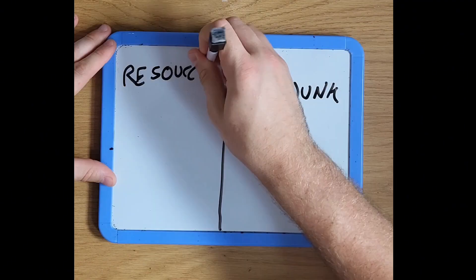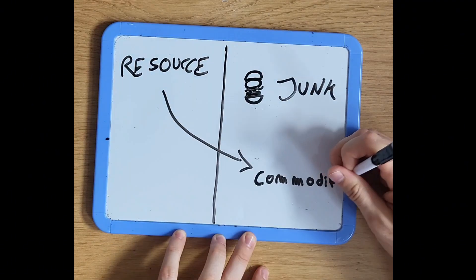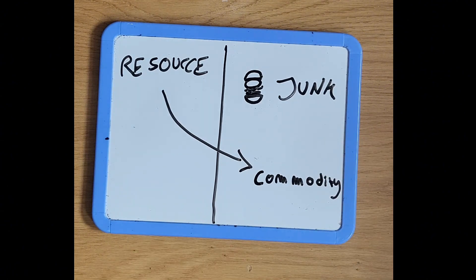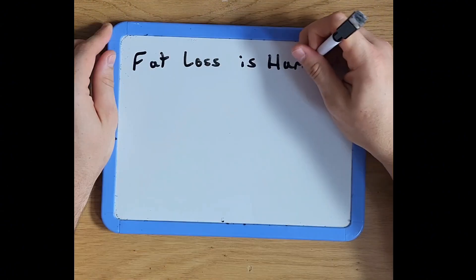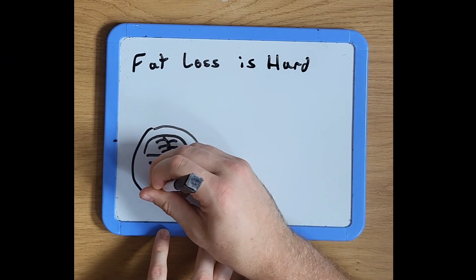Ultra processed junk. In ancient times, food was just a resource. But now it's a commodity. Cheap, addicting, and everywhere. So yeah, fat loss is hard because you're trying to outsmart a survival system.